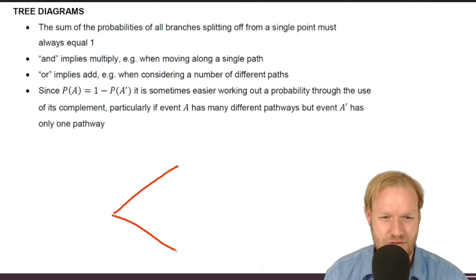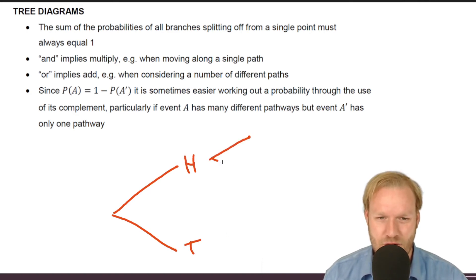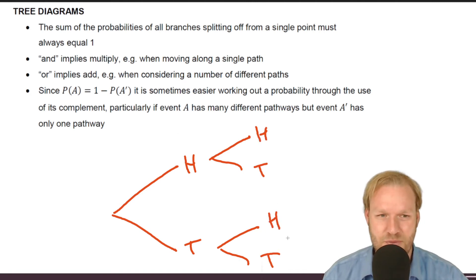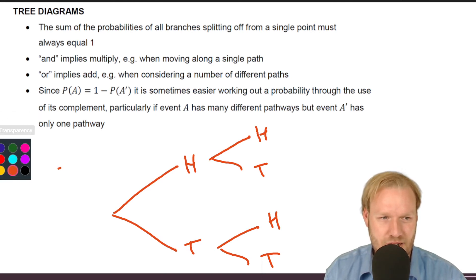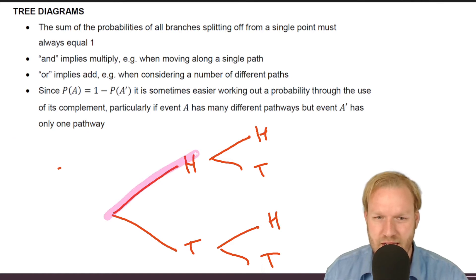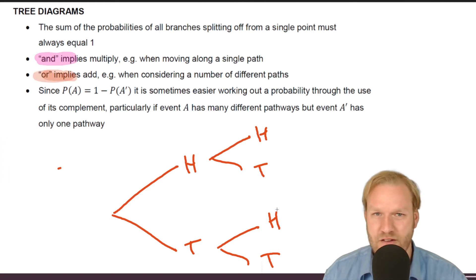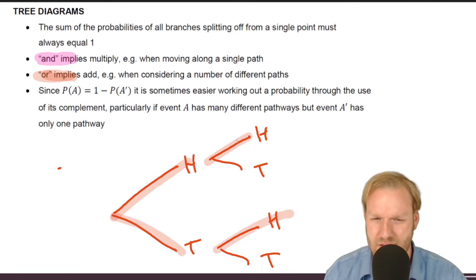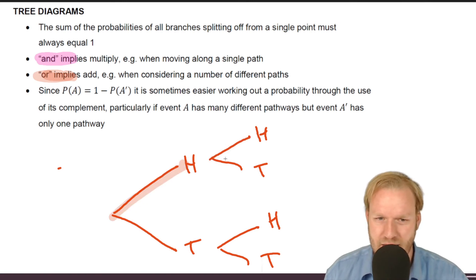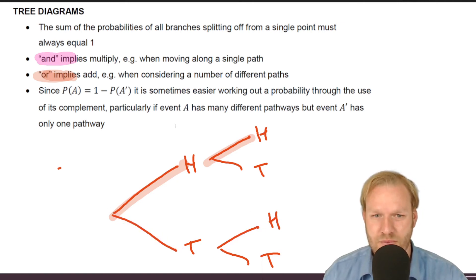For a tree diagram, consider tossing a coin twice: first toss gives heads or tails, then second toss gives heads or tails again. You can get heads-heads, heads-tails, tails-heads, or tails-tails. 'And' means going along one path, while 'or' means different paths. As you go along a path you multiply, and when you choose different paths you add.